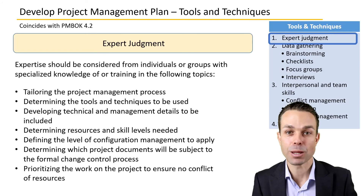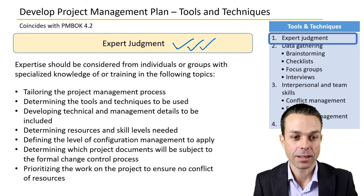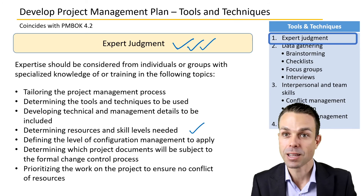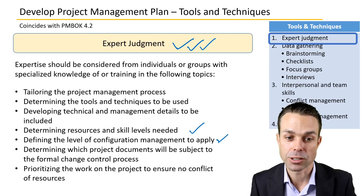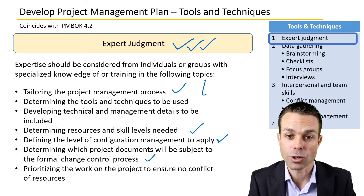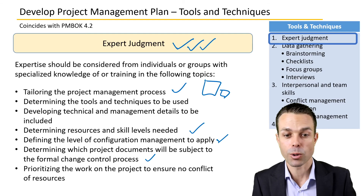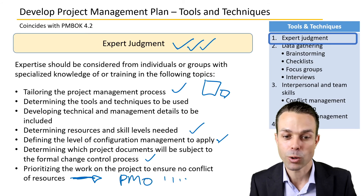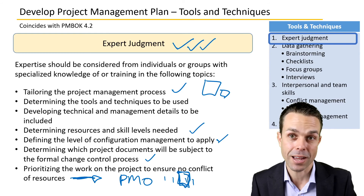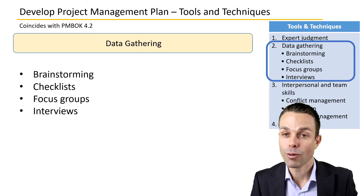For tools and techniques, we need expert judgment from various experts. This includes determining the resources and skill levels needed, defining the level of configuration management, determining which project documents will be subject to formal change control, tailoring the project management processes for a big or small project, and prioritizing work to ensure there's no conflict of resources — perhaps tapping into a project management office.